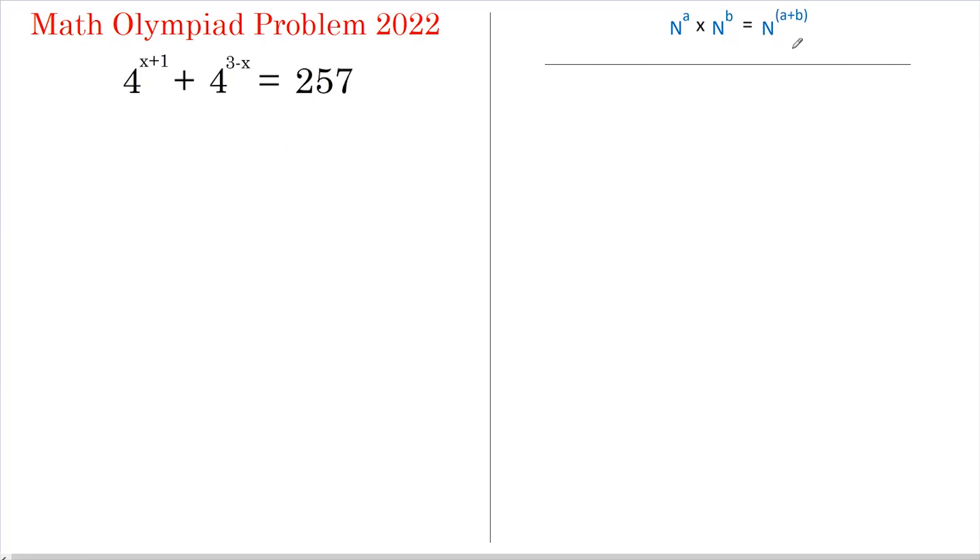I'm going to start by using this rule to split out these two terms. So this becomes 4 to the x multiplied by 4 to the 1 plus 4 to the 3 multiplied by 4 to the negative x and that all equals 257.